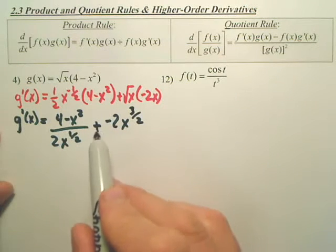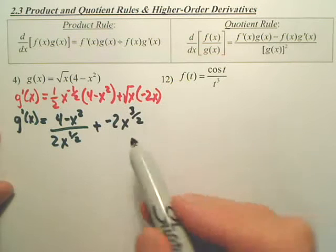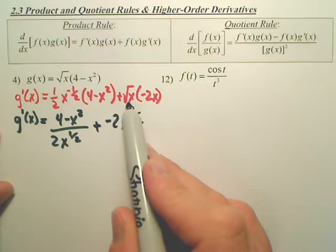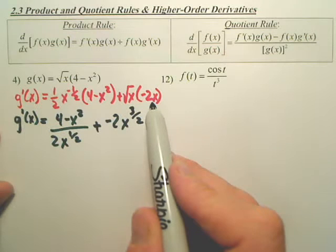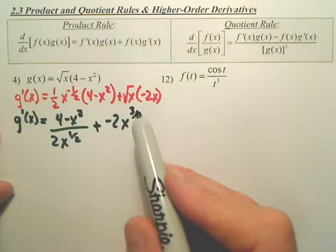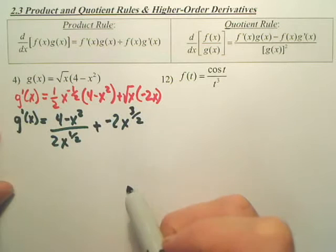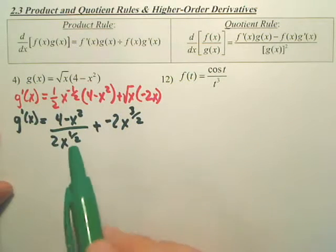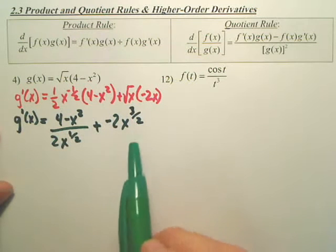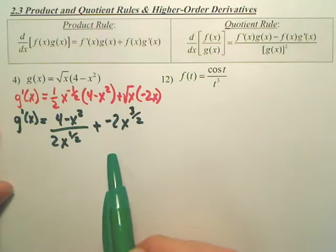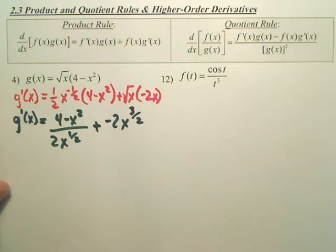In calculus, one of the most annoying things is simplifying. Sorry. Let's simplify. First of all, with this one, I'm going to write this as 4 minus x squared over 2x to the 1 half, plus negative 2x to the 3 half. Now, I should have put minus, technically, because plus, but where do I get 3 halves from? Isn't that 1 half? x to the 1 half times x is 1 half plus 1 is 1 and 1 half, which is 3 over 2.